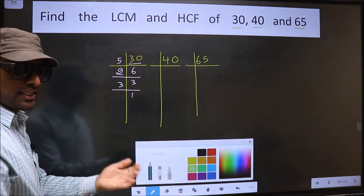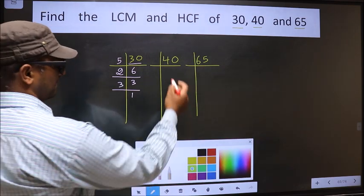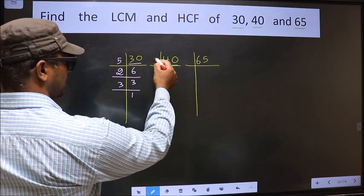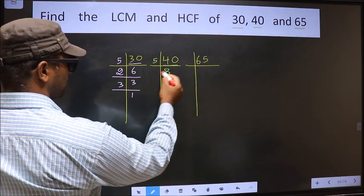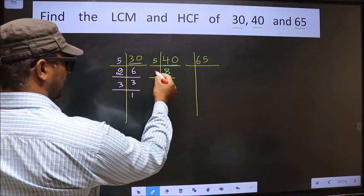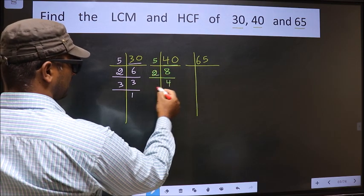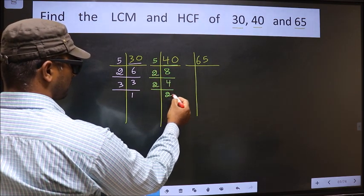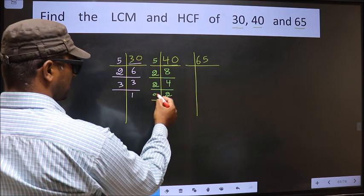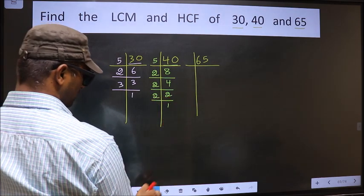Now the other number, 40. 40 is 5×8. Now we have 8. 8 is 2×4. Now 4 is 2×2. Now we have 2. 2 is the prime number, so 2×1 is 2.